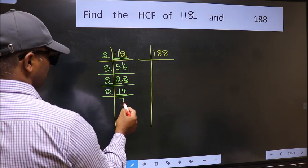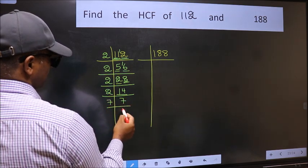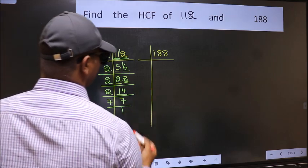Now, 14 equals 2 times 7. 7 is a prime number, so 7 times 1 equals 7. The other number.